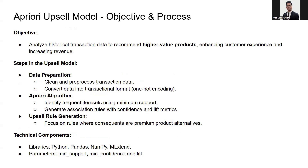I'm going to explain the Apriori upsell model and the process involved. Our project uses it to recommend higher value products to customers, enhancing both customer experience and retail profits. The process starts with data preparation — cleaning and pre-processing transaction data and converting it into a transactional format. The Apriori algorithm then identifies frequent item sets and generates association rules based on metrics like support, confidence, and lift.